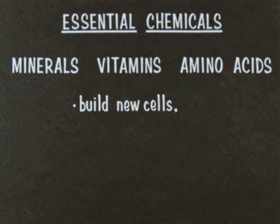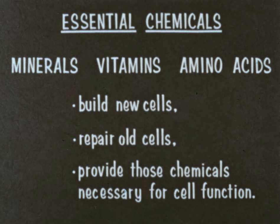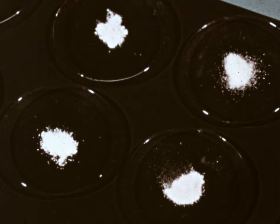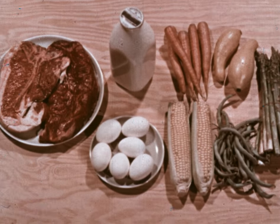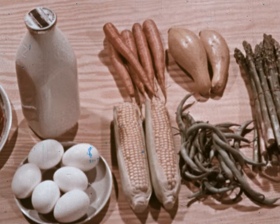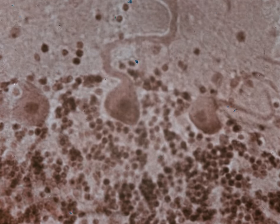These nutrients build new cells, repair old cells, and provide those chemicals necessary for cell function. About 20 different amino acids, each of which contains nitrogen, have been chemically isolated from proteins. Eight of these amino acids are absolutely essential to life. These essential amino acids are not easily stored in the body, so it's important that every day we eat natural foods high in proteins which contain these amino acids. Such foods include lean meats, milk, eggs, and certain vegetables. The amino acids in these foods provide the cells of our bodies with nitrogen-containing compounds essential to the chemical processes of growth and repair.